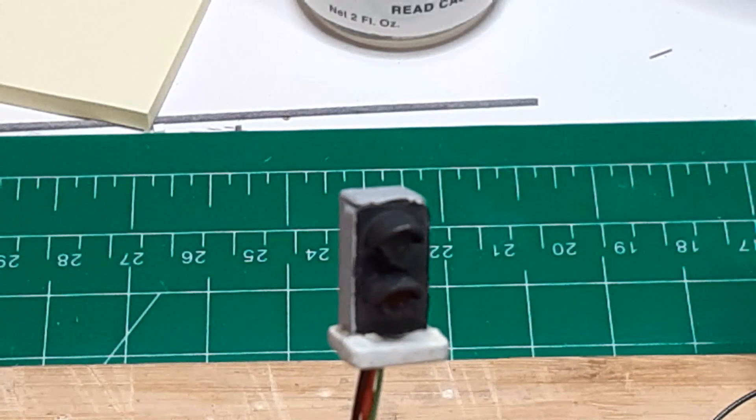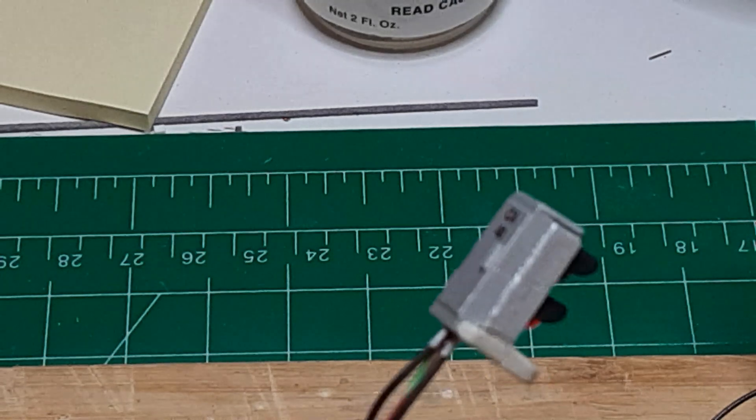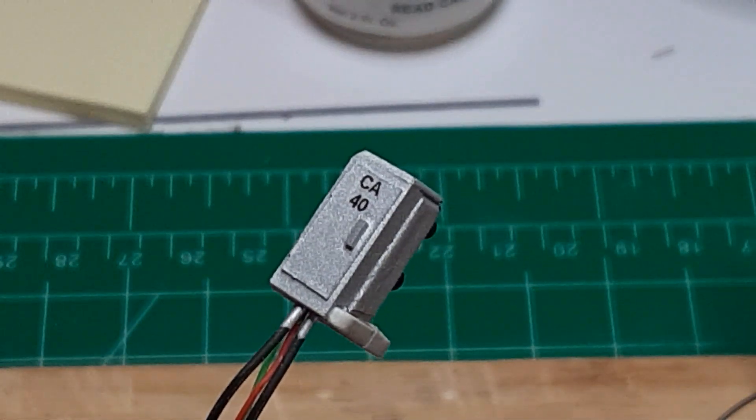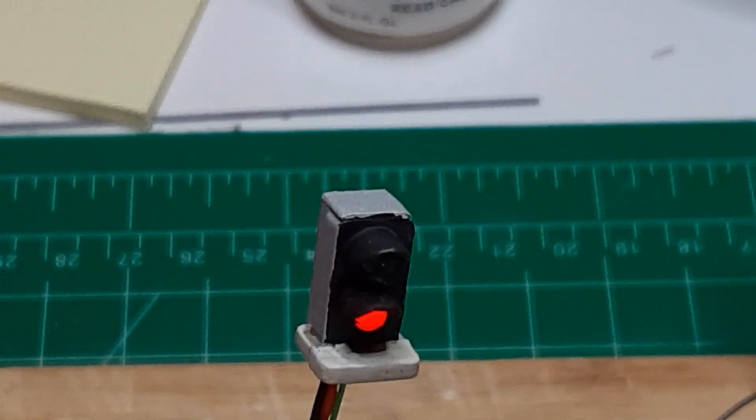In this video, I'll show you how I build my dwarf signals using common anode wiring. Later on, I'll show you how to build a controller, which will control either common anode or common cathode devices.